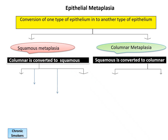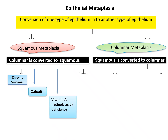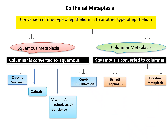Examples of squamous metaplasia include chronic smokers — because of smoke, the columnar epithelium in the trachea and bronchi is converted to squamous epithelium. Calculi formation in the pancreatic duct is also an example. Vitamin A deficiency leads to squamous metaplasia in the respiratory tract and cornea. In the cervix, human papillomavirus infection causes squamous metaplasia. Examples of columnar metaplasia are Barrett's esophagitis and gastric intestinal metaplasia.